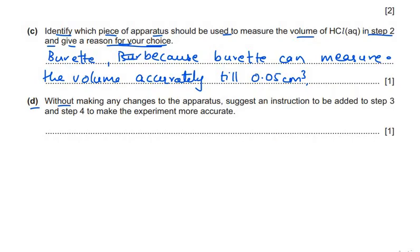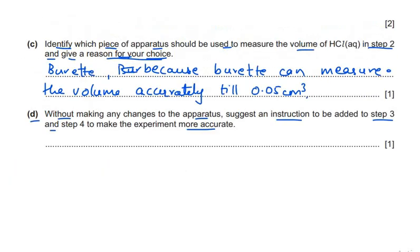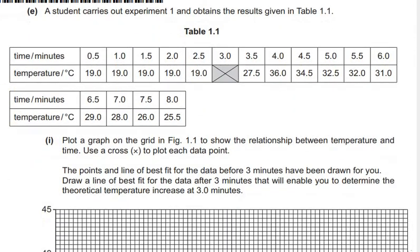Sub-question (e): without making any changes to the apparatus, suggest an instruction to be added to steps 3 and 4 to make the experiment more accurate. Steps 3 and 4 involve measuring temperature every 30 seconds. Without changing any apparatus, the only method to improve accuracy is to stir the solution continuously. This ensures more accurate and consistent temperature measurements throughout the experiment.